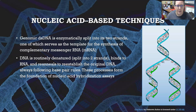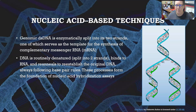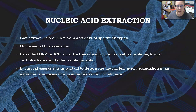Genomic double-stranded DNA is enzymatically split into two strands — this is what happens in the cells — one of which will serve as a template for the synthesis of its complementary messenger RNA. This DNA is routinely denatured, split into two strands; it can bind RNA, re-anneal, and re-establish the original DNA, always following the base pair rules. Because of all of that, we can use these processes as a foundation of nucleic acid hybridization assays, because we know how it's going to behave.